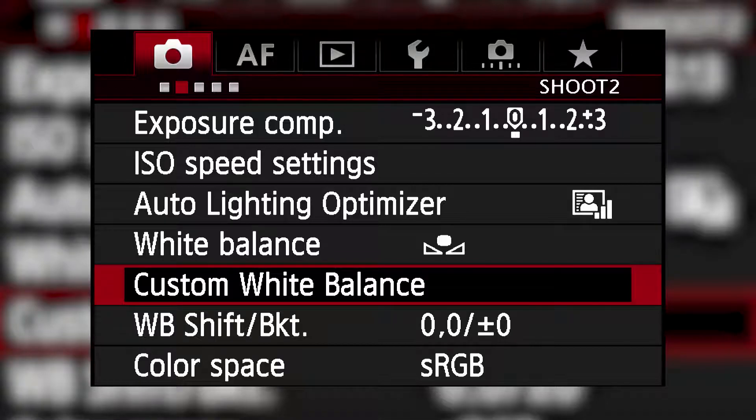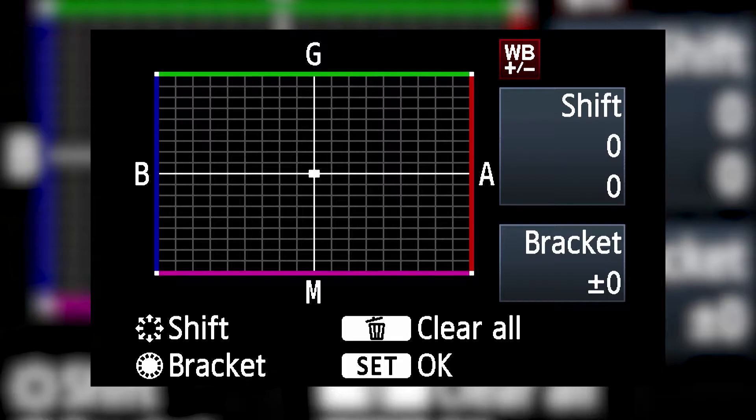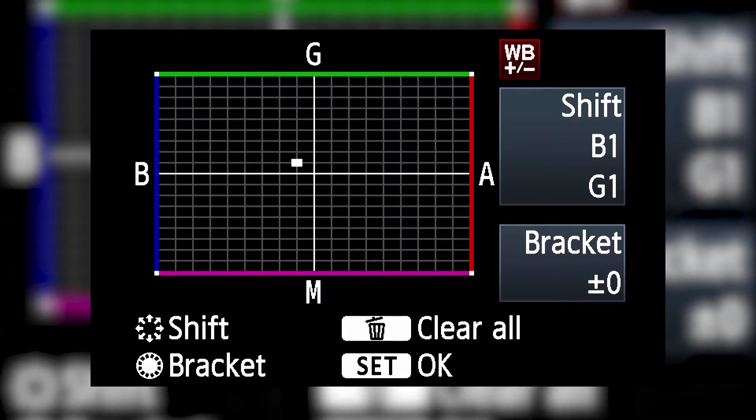The second option of white balancing we will discuss is to add more color onto the color spectrum. To do this, click the menu button again and scroll down to the WB shift bracket option. Now you can add more blue, green, red or pink into your white balance.